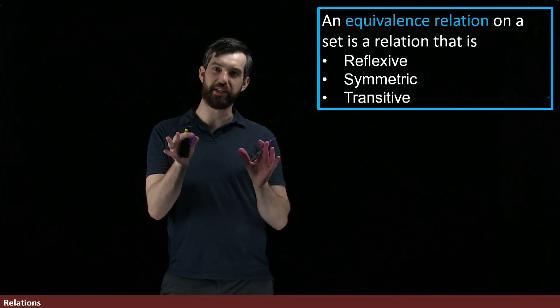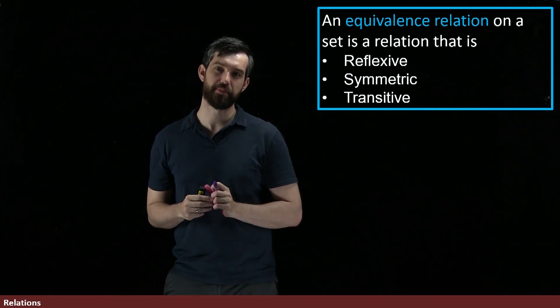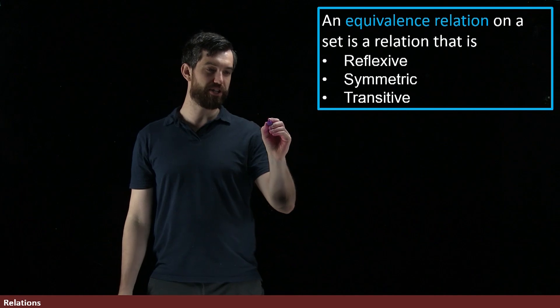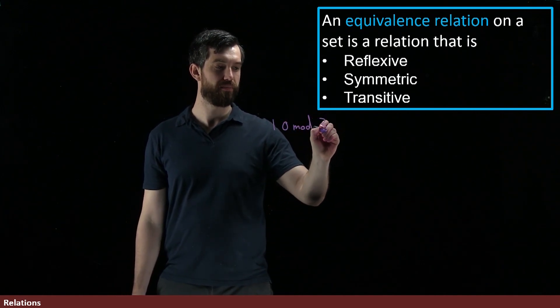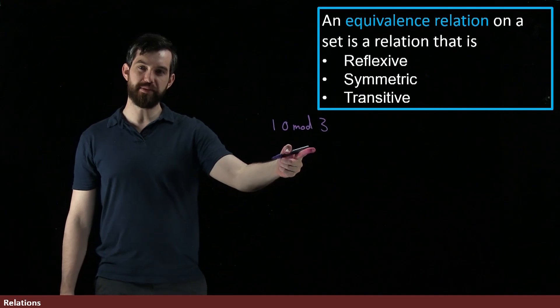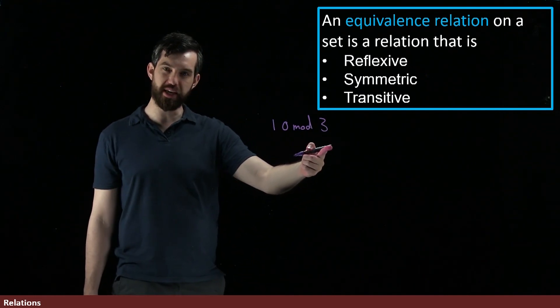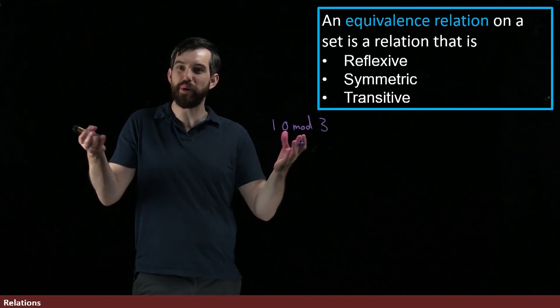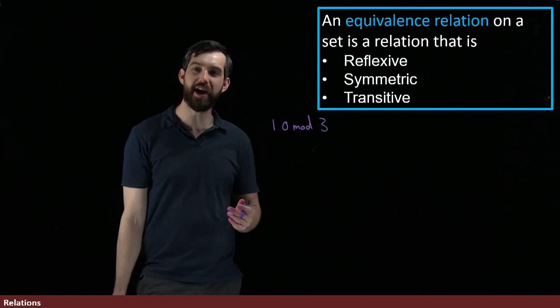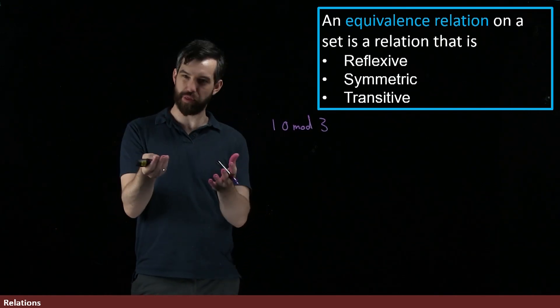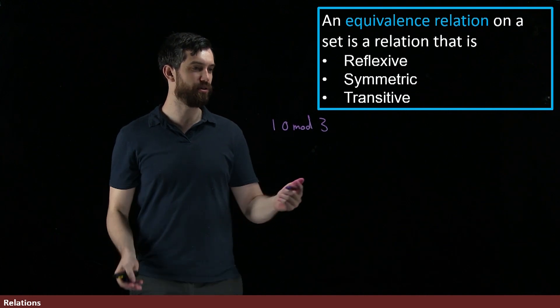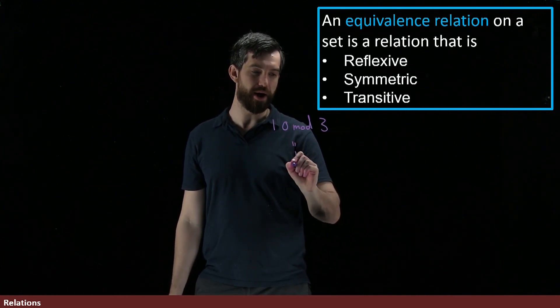The second example I want you to consider is modular arithmetic. Suppose I have some expression like, how about 10 mod 3? And we know that 10 mod 3 is going to be the value of 1. This is the remainder. If you take 10 divided by 3, or in other words, you can say 10 is equal to three copies of 3 plus 1. So we know that this is just going to be equal to the value of 1.